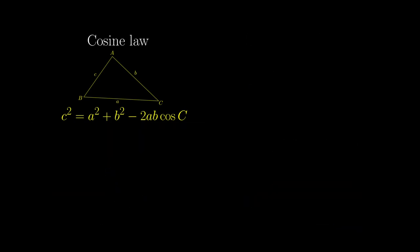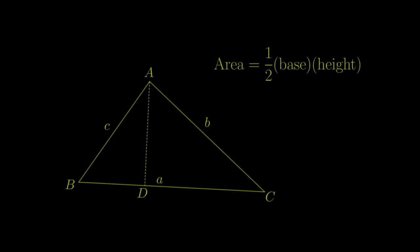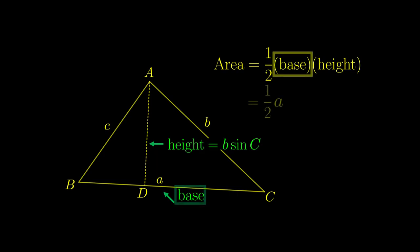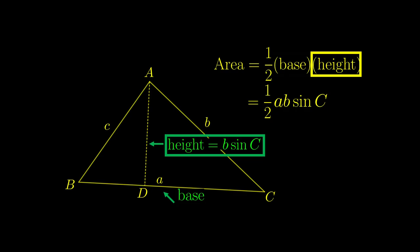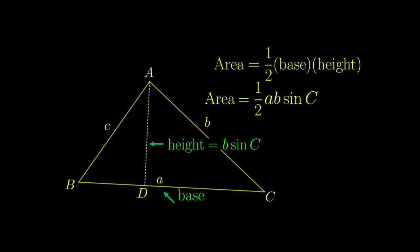The first proof is the most seen, because it is probably also used in textbooks. Area of a triangle is half base times height. We can let this side with length a to be the base, and the height can then be represented as b times sine C, and so the area is half ab sine C, which is the first result we need for this proof.